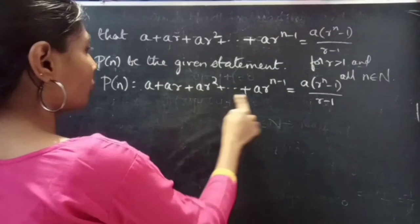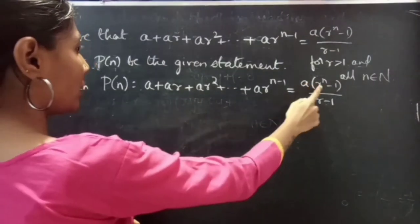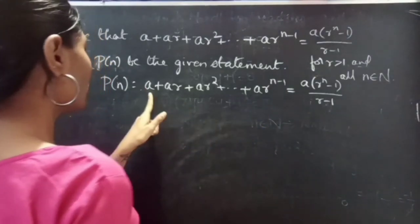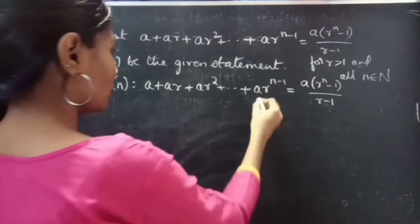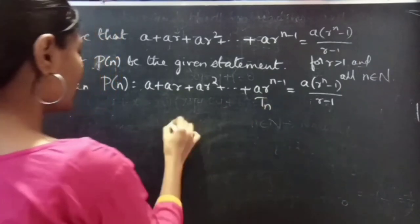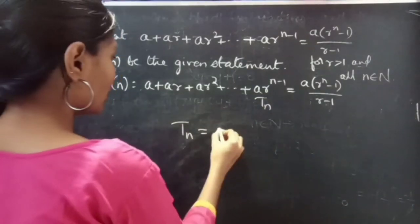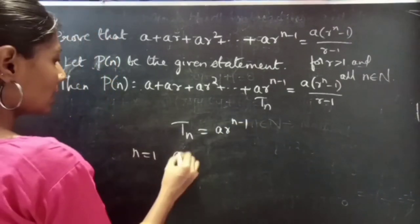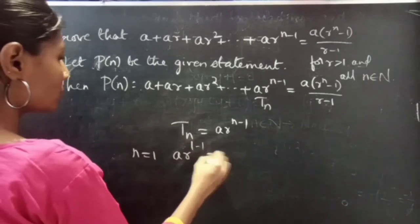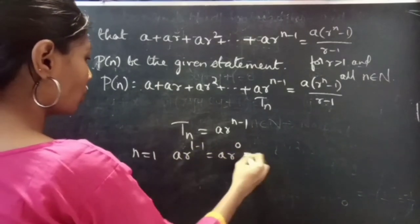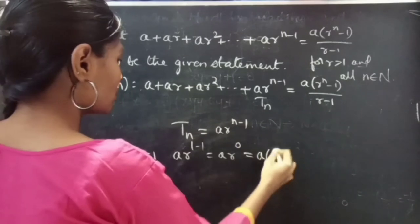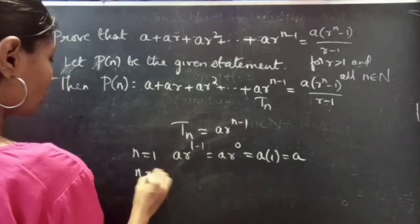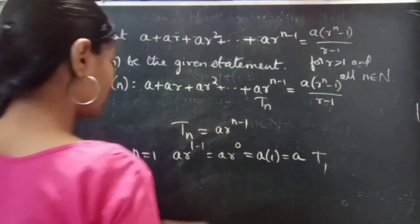Here we have the sum of n terms which equals a times (r to the power n minus 1) divided by (r minus 1). This is the first term, second term, third term, and so on up to the nth term. Let's represent the nth term by tn. Then tn equals a times r to the power n minus 1. If you put n equals 1, you get a times r to the power 0, and since anything to the power 0 is 1, you get a times 1 equals a, which is the first term.